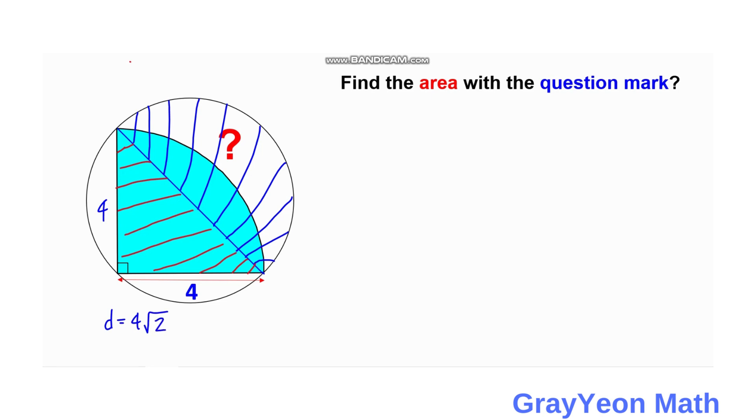Okay, so now we can actually find the area of this white region with question mark. So we have area, the area is equal to pi times d square over four, but d square is actually four square root of two square, all over four.